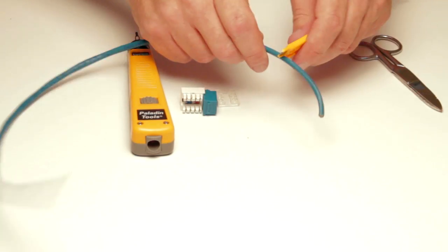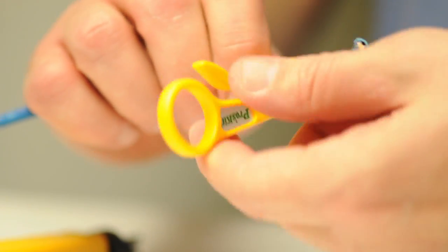The first thing we are going to do is strip back the jacket of the cable. Taking our rotary stripper, we remove the jacket.